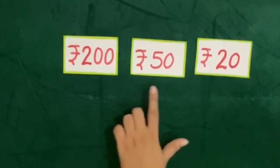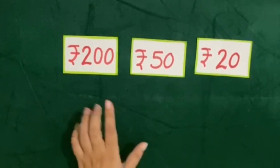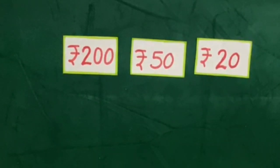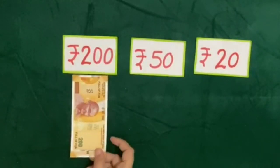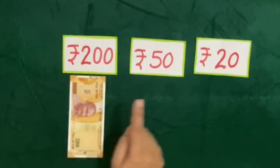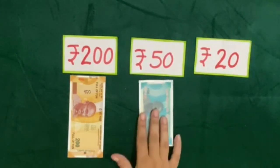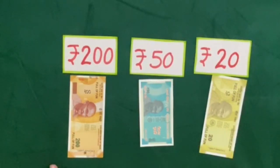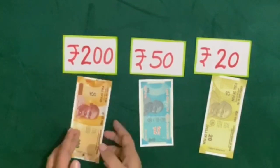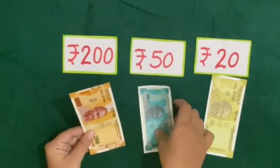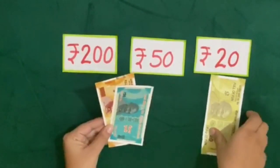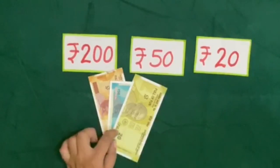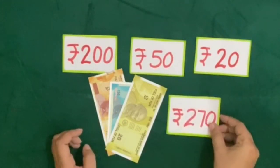Here the value of rupees is written on the paper, so we will find the total sum of these values using currency notes. This is rupees 200 — we will place a 200 rupee note. Then rupees 50 — a 50 rupee note. And rupees 20 — a 20 rupee note. Now let us find the total: 200, then a 50 rupee note — that is 250, and a 20 rupee note — that is 270. So the total value of these currency notes is rupees 270.